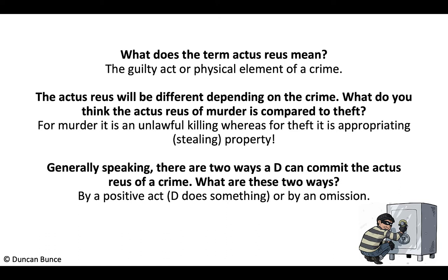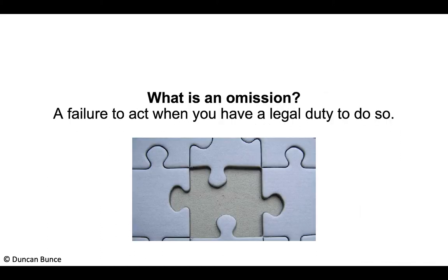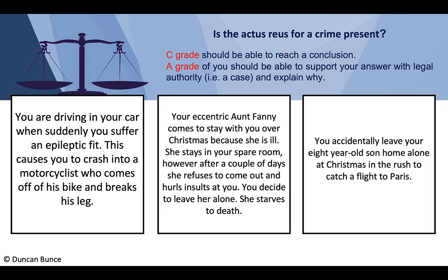There are two ways a defendant can commit the actus reus: by an act — where the defendant does something — or by an omission. An omission is not simply any failure to act; it's a failure to act when there is a legal duty to do so, established either in case law precedent or statute.